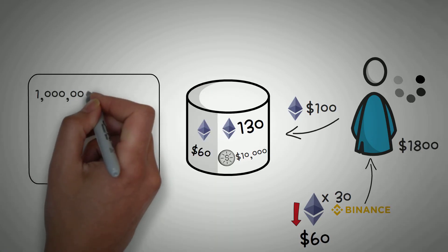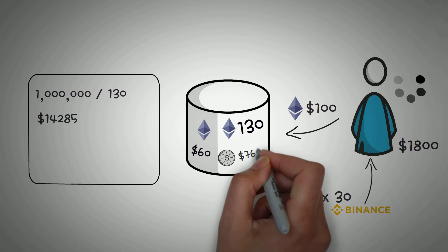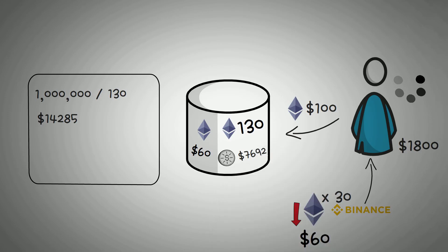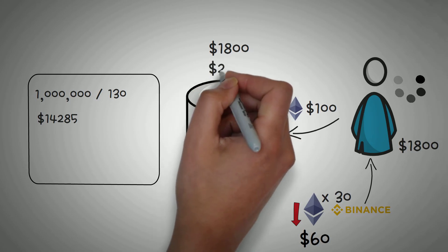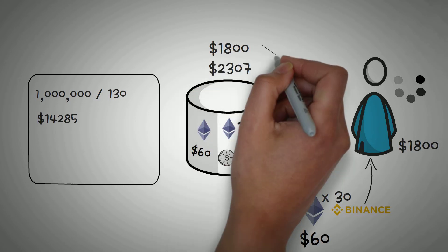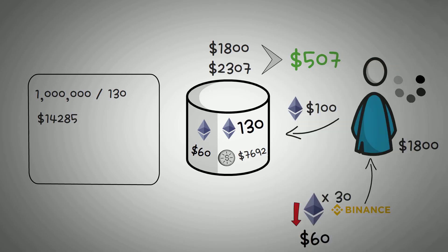Now let's see how much they made. A million dollars divided by 130 Ethereum gives us $14,285, which means the pool should have $7,692, however it has $10,000. This means that the trader received the difference for giving the pool 30 Ethereum. In short, the trader bought Ethereum at $1,800 and sold for $2,307, which means he earned $507. That's pretty decent for just buying and selling in a couple of minutes.